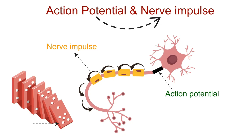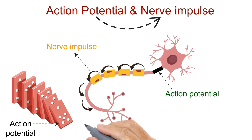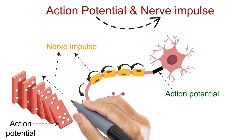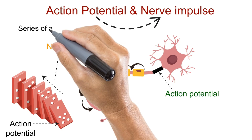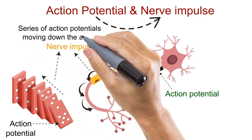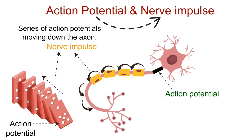Each falling domino represents an individual action potential, while the continuous motion represents the nerve impulse. So, in simple terms, a nerve impulse is nothing but a series of action potentials moving down the axon.